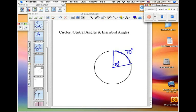if I take another point on the circle and I connect the intersected points, this is an inscribed angle. And if the arc is 70, then the inscribed angle is actually 35 degrees.